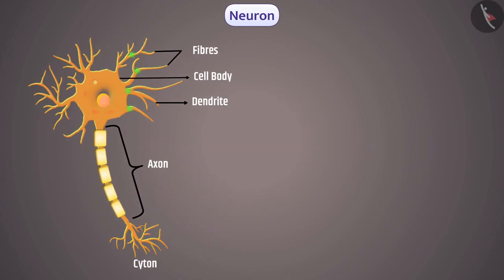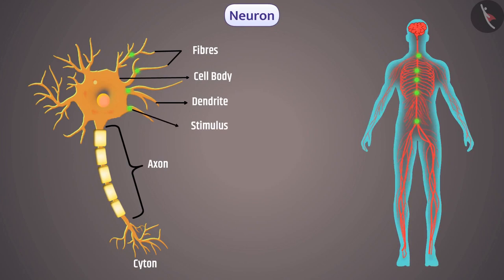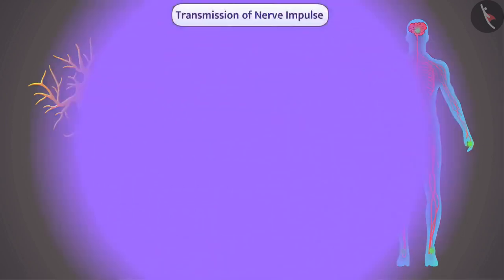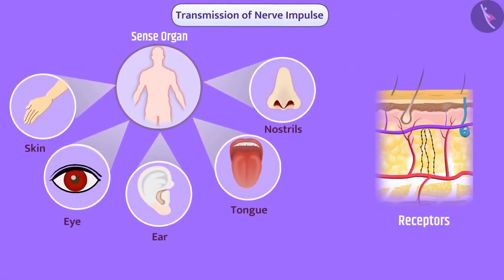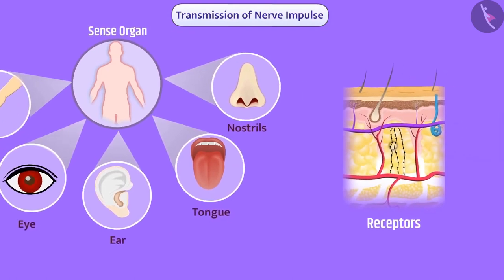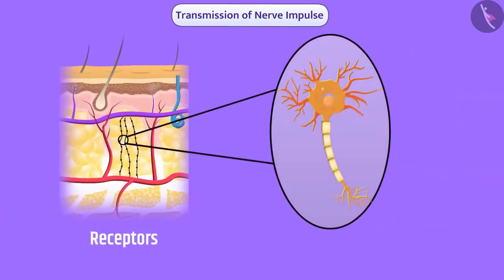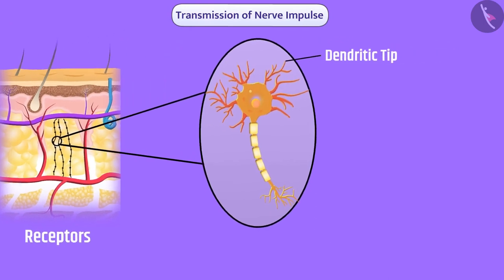A neuron transmits information of stimulus from one part of the body to another through electrical impulses. The sense organs in our body consist of receptors. Neurons are present in the receptors, and the dendritic tip identifies information in the environment.